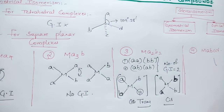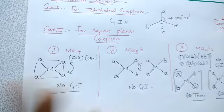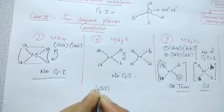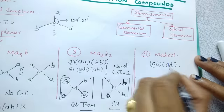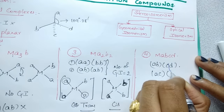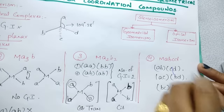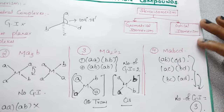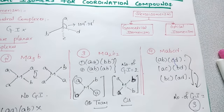Now coming to the trick: just find out how many combinations are possible, and those combinations give you the number of geometrical isomers. For MA4: AA — only one combination is possible, so only one isomer, no GI. For MA3B: AA, AB — that's it, no GI. For MABCD, the combinations are: A-B, C-D; then A-C, B-D; then B-C, A-D. Total 3 GIs are possible. Just find how many combinations are possible and take that as the number of geometrical isomers.